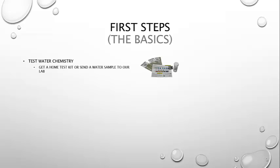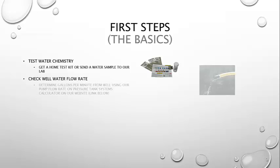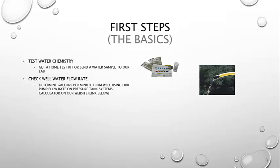First, test your water chemistry by buying a home test kit or sending a water sample to our lab. Next, check your well water flow rate. Determine the gallons per minute from your well using our Pump Flow Rate on Pressure Tank Systems calculator on our website.